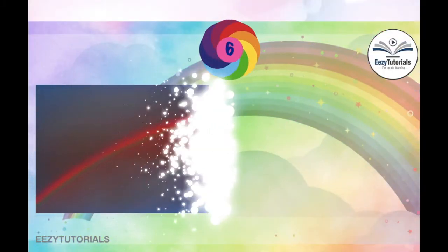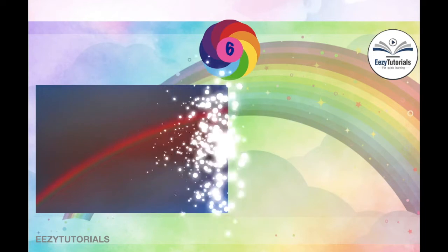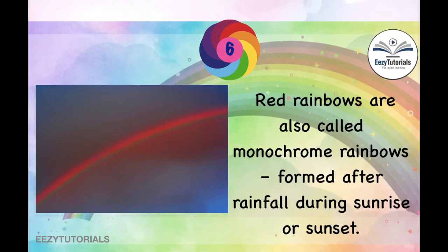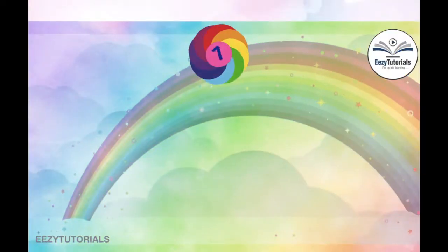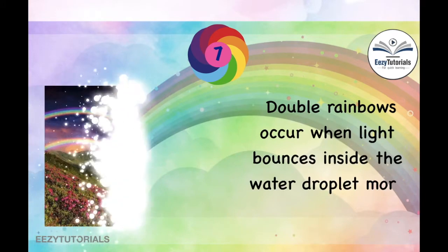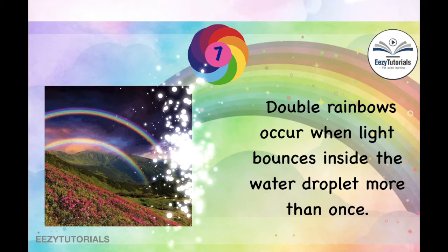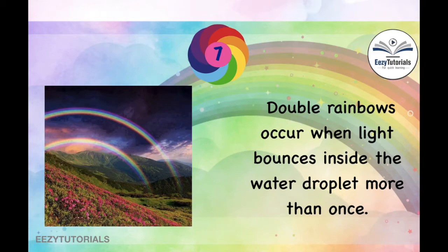There are also moonbows — when moonlight reflects through the raindrops, a rainbow is formed, and that is called a moonbow. There are also monochrome rainbows, like red rainbows — they are formed after rainfall due to sunset and sunrise, appearing in only one single color. And interestingly, there are also double rainbows, which occur when light bounces inside the water droplet more than once.